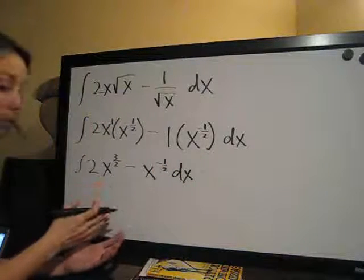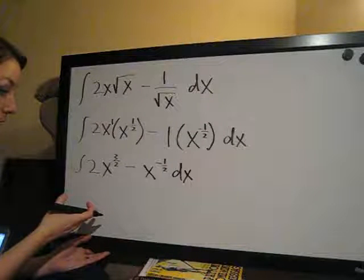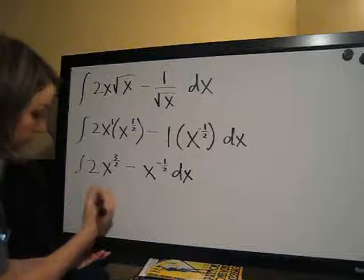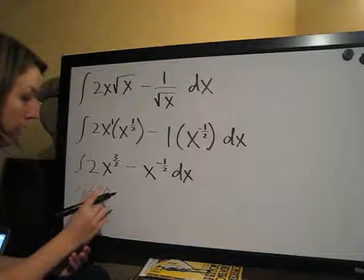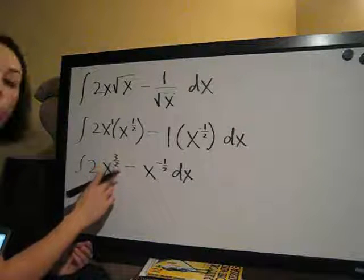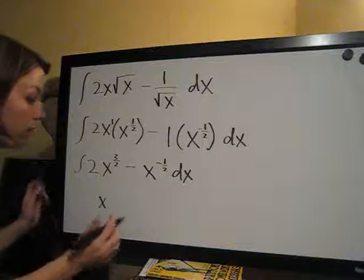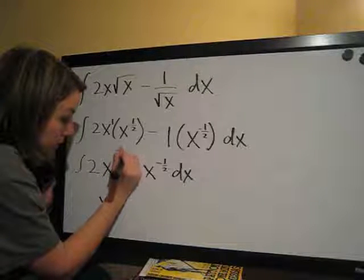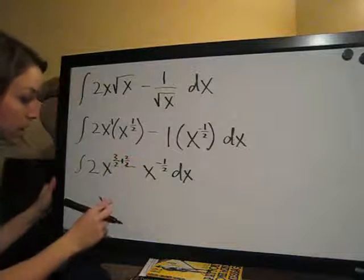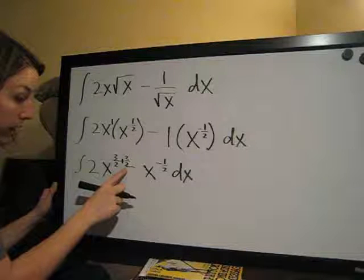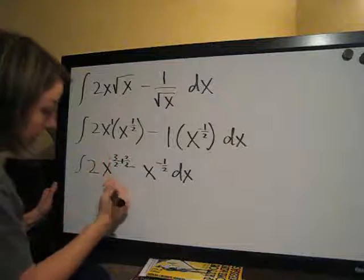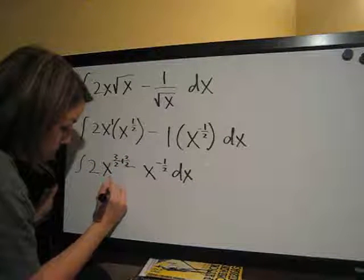Now, this is something we can actually integrate, so we are going to go ahead and take it term by term. We are going to write our x down here, and we are going to add 1 to the exponent. 3 halves plus 1, we are going to say plus 2 over 2, which is the same as 1. We are adding 1. 3 plus 2 is 5 over 2. So, 5 halves is the exponent.